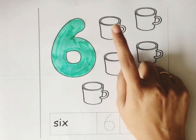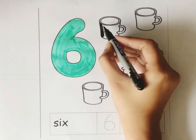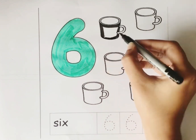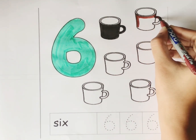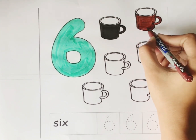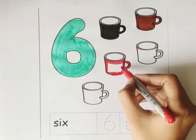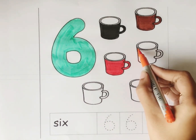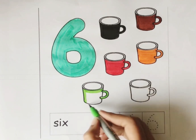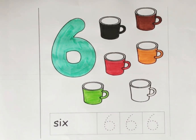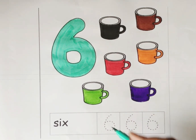Number 6. Let's count the total number of mugs: 1, 2, 3, 4, 5, and 6. We have total 6 mugs. Black color. Brown color. Red color. Orange color. Light green color. Violet color.